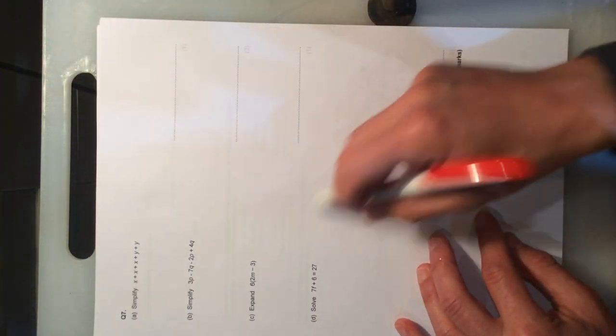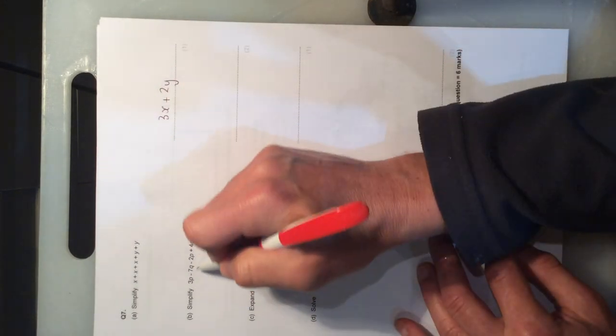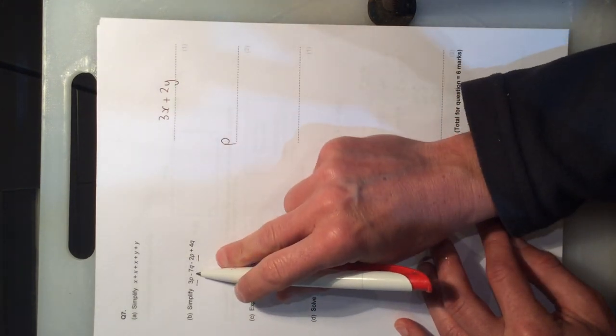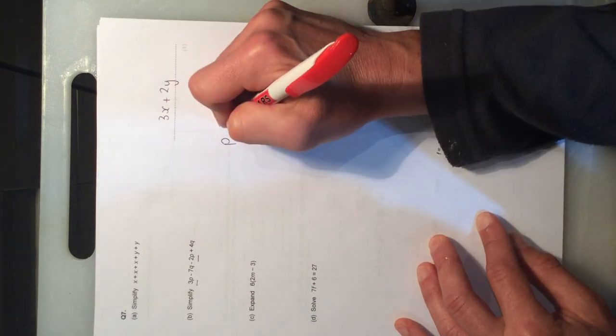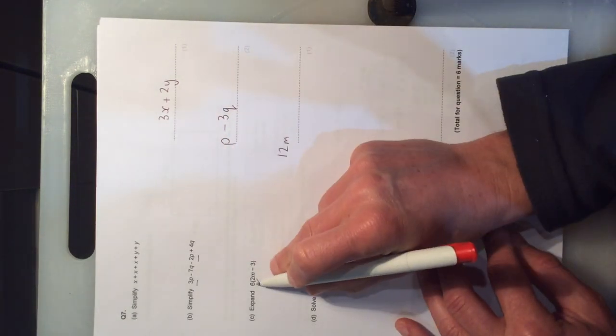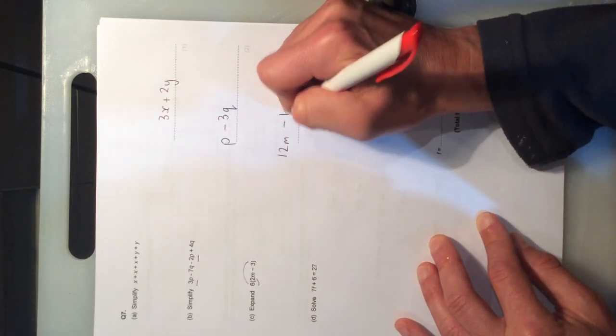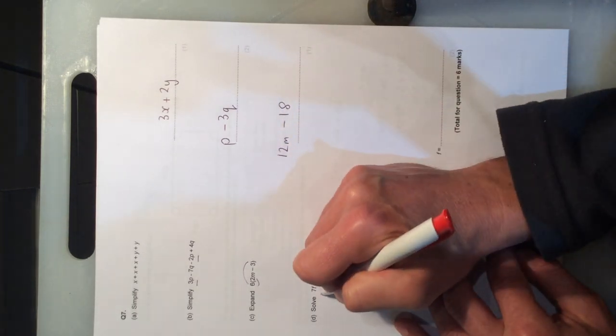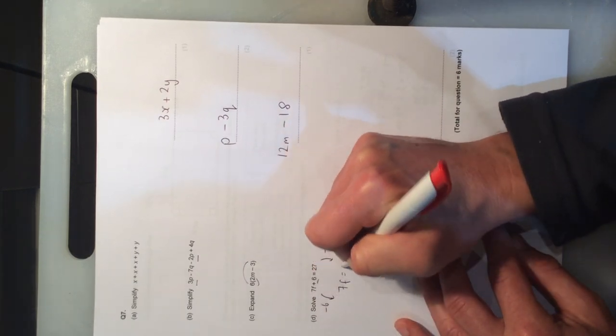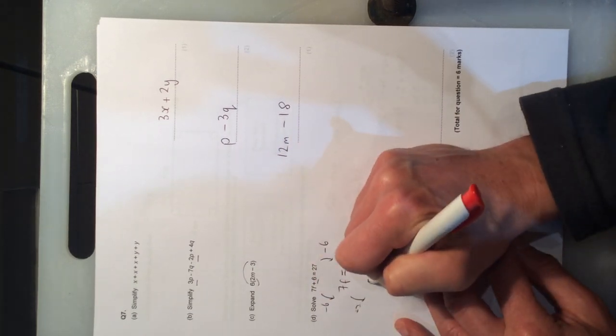Simplifying expressions for this question here, you've got 3x plus 2y. Collecting like terms, 3p take away p is 1p. But careful on this part, minus 7q add 4q is negative, still 3q. Expanding the brackets, multiply the term at the front by both parts inside. 6 times by 2m is 12m. 6 times by minus 3 is minus 18. It's solving an equation, doing inverses. Subtract 6 from both sides. That gives me 7f equals 21. And divide by 7, to give us that f is equal to 3.